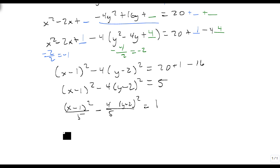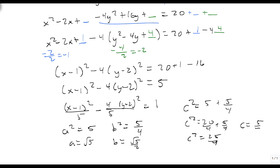And if we wanted to, we now know that our a squared is 5, our b squared is 5 fourths. So a is the square root of 5, and b is the square root of 5 over 2. We know that our c squared is equal to 5 plus 5 fourths. So c squared is equal to 20 fourths plus 5 fourths, which is 25 fourths. So c is equal to 5 halves.